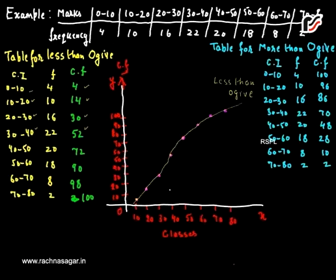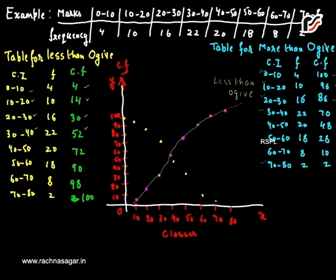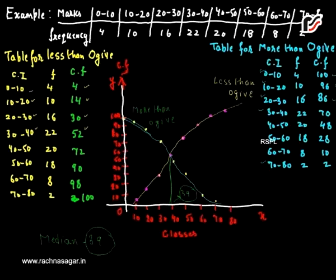Now we will draw the more than ogive on the same graph. The points for the more than ogive are: (0, 100), (10, 96), (20, 86), (30, 70), and continuing through to (70, 2). We plot and join all these points to get the more than ogive curve.